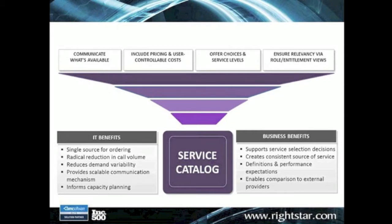The service catalog probably gets more payback or return on investment than almost anything else you can do, because now you can offer your user community a single portal where they can come and request whatever services you elect to provide — incident-related services like printer or PC issues, but also facilities issues, HR benefit updates, or any other department you'd like to include. They don't need a separate place to request those services; it can all be done through a service catalog. You'll be able to ask a series of simple questions to capture all the information needed to create back-end processes, whether going to facilities, HR, security, or IT — all kept transparent from the user's perspective.